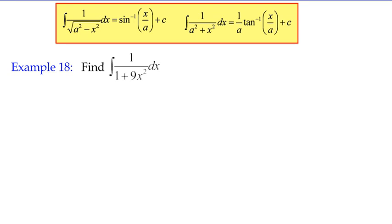You're going to be faced with integration problems which look like one of these forms here. You're either going to be given a fraction with a square root on the denominator with a difference of squared terms, or a fraction with a sum of squared terms with no square root sign. If it's the difference of squared terms with a square root, your answer is going to be inverse sine. If it's the sum of squared terms, it's going to be inverse tan.